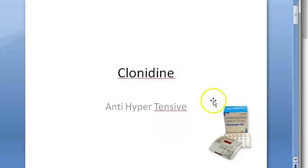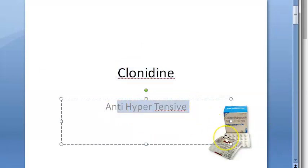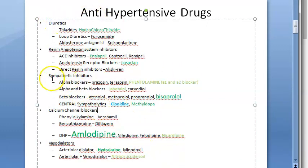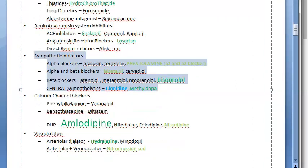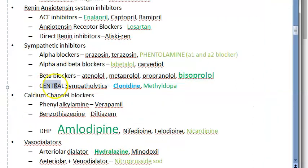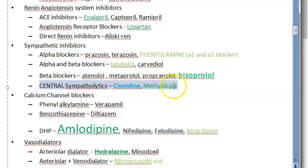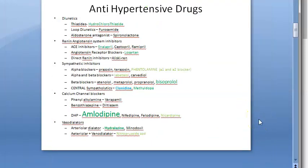In this video we want to look at clonidine, which comes under the antihypertensive chapter. In antihypertensives you have many types of drugs; one of them is sympathetic inhibitors. Under central sympatholytics you have clonidine and methyldopa. So clonidine and methyldopa are central sympatholytics — they work on the central nervous system. Other sympathetic inhibitors include alpha blockers, beta blockers, etc.